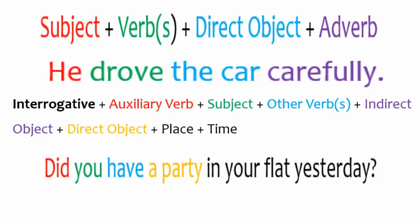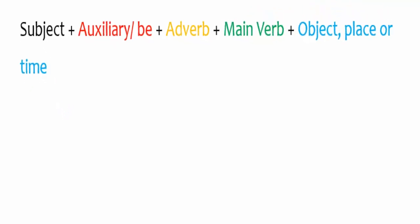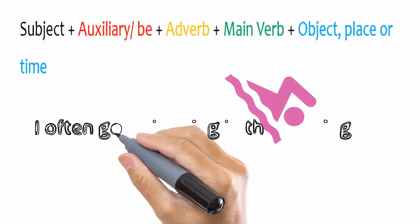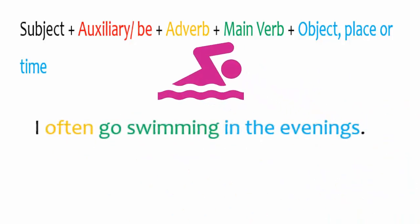Adverbs of frequency are placed before the main verb, unless the verb is 'be'. So the order becomes subject, auxiliary verb or be, adverb, main verb, object, place or time. As in the sentence: I often go swimming in the evenings.